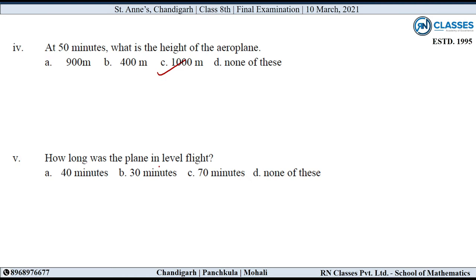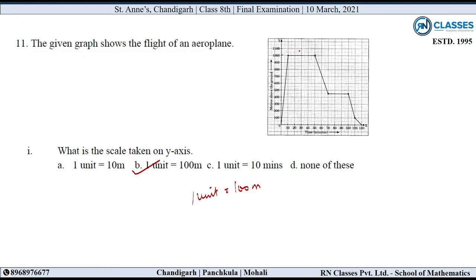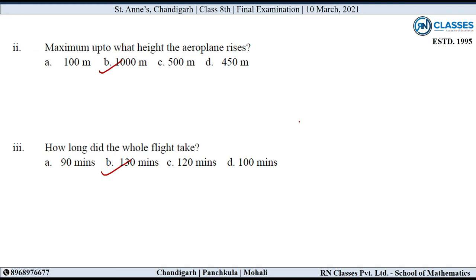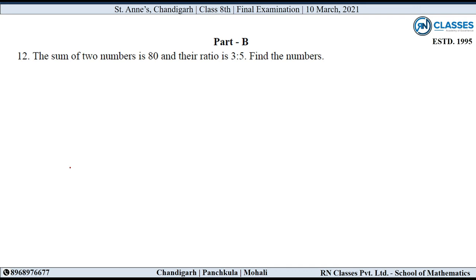5th part: How long was the plane in level flight? कितने time तक वो एकी level पे रहा? एकी level पे corresponding time देखें: यहाँ है 10 minutes और यहाँ है 50 minutes। तो कितने time तक एकी level पे रहा? 50 minus 10 = 40 minutes. So option A is correct.